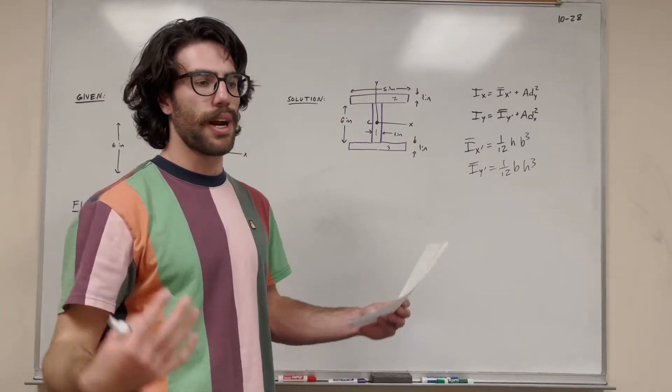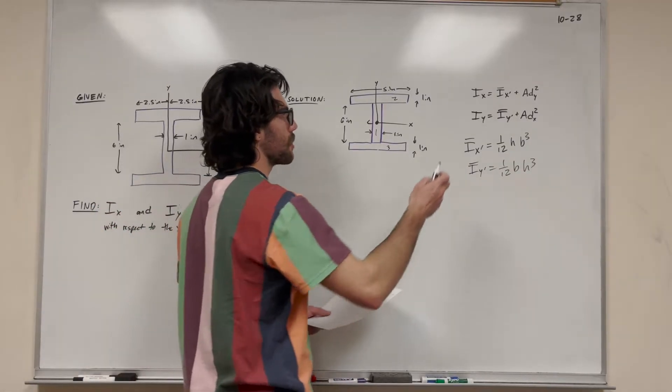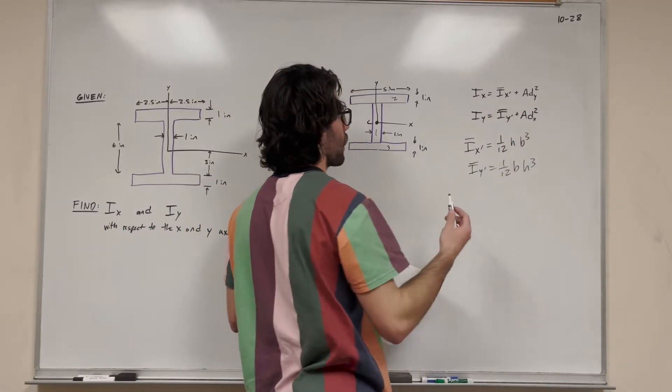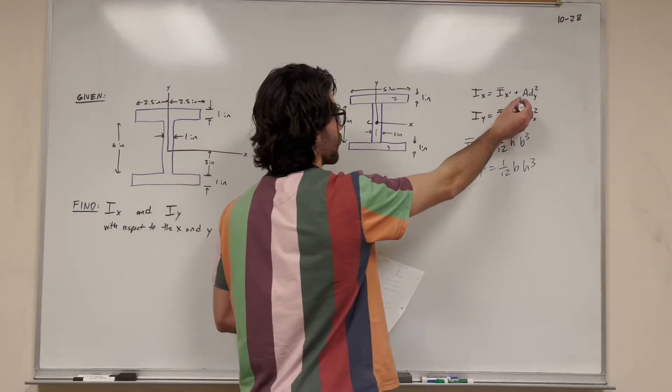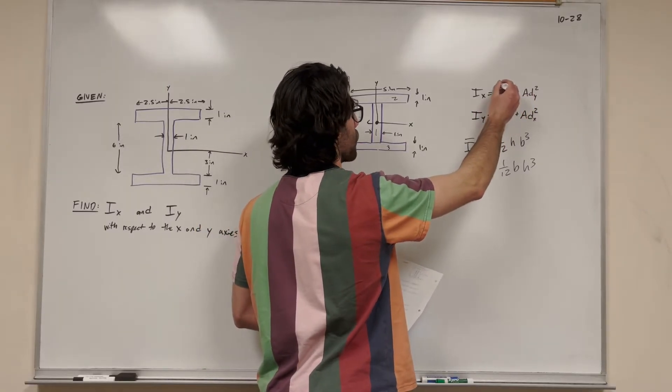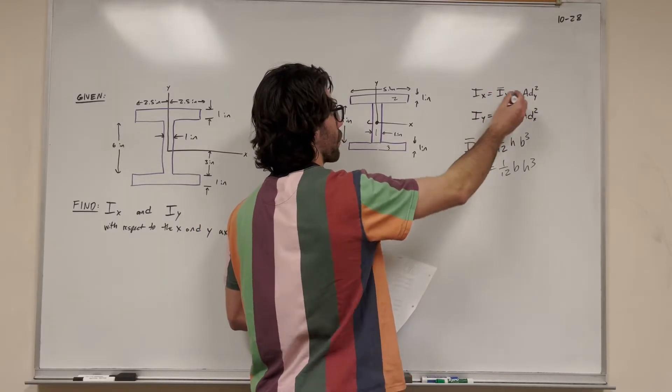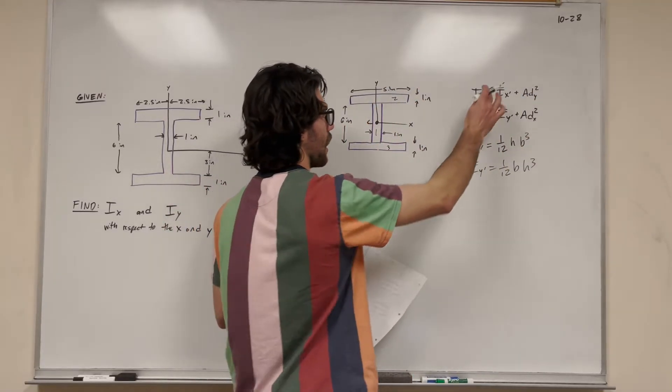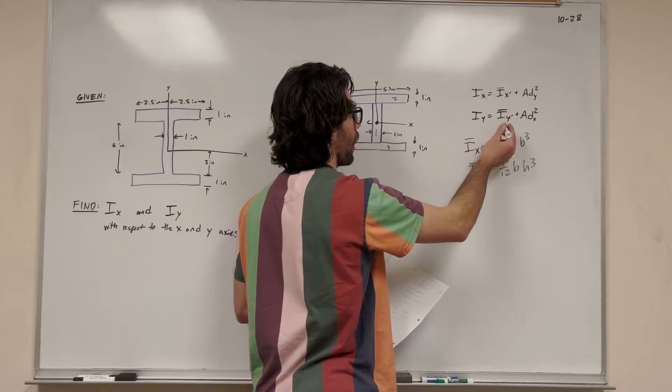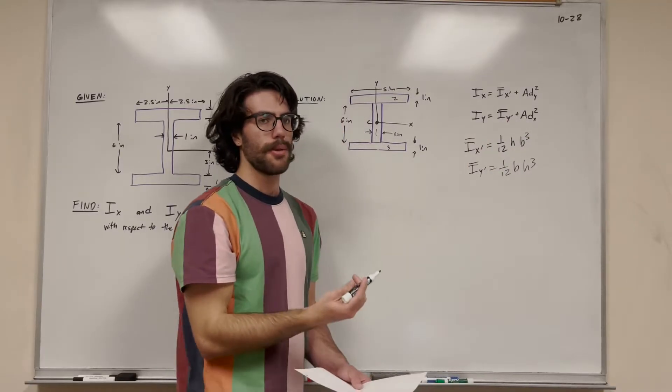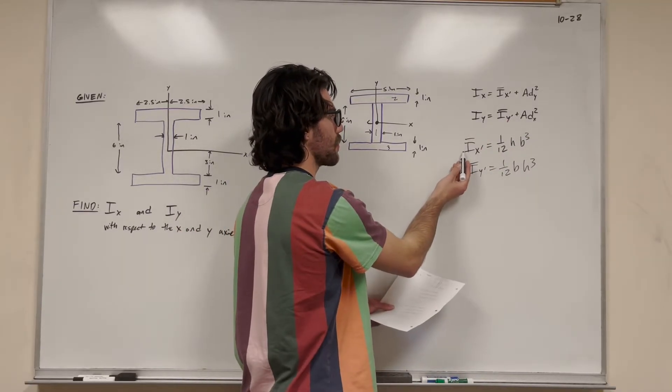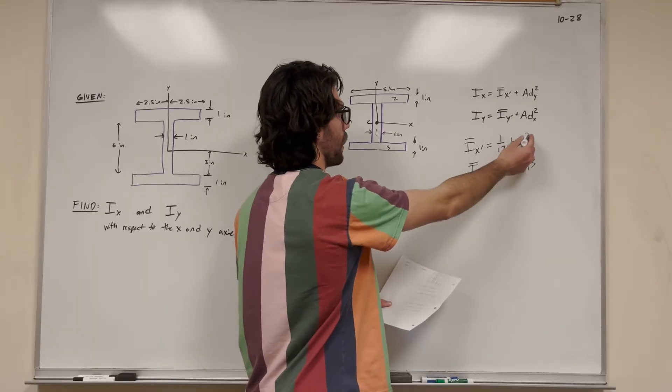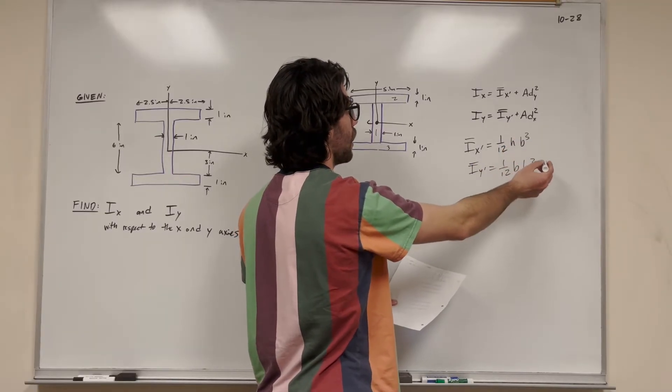We want to use the parallel axis theorem, which I have written here. We're going to sum this up for each of the three shapes. This has the section I-bar x and I-bar y. For a rectangle, if you look at the back of the book, you'll find the equations are 1/12 height base cubed or 1/12 base height cubed.